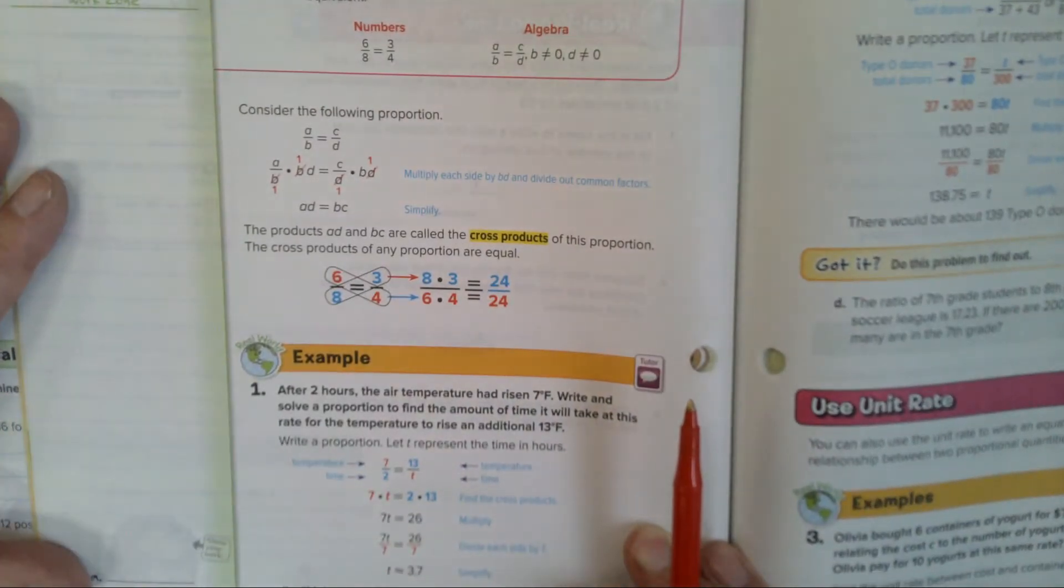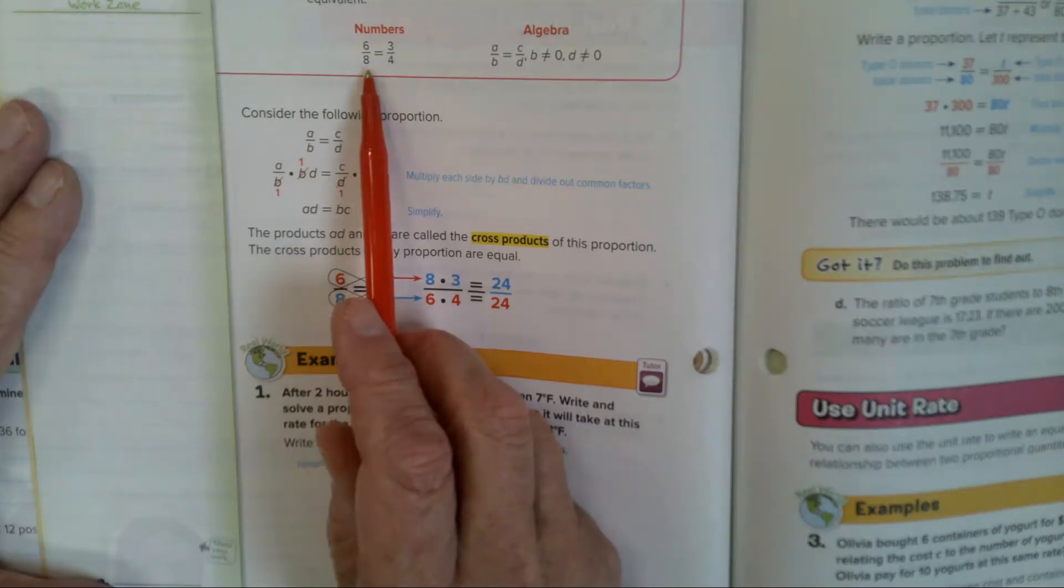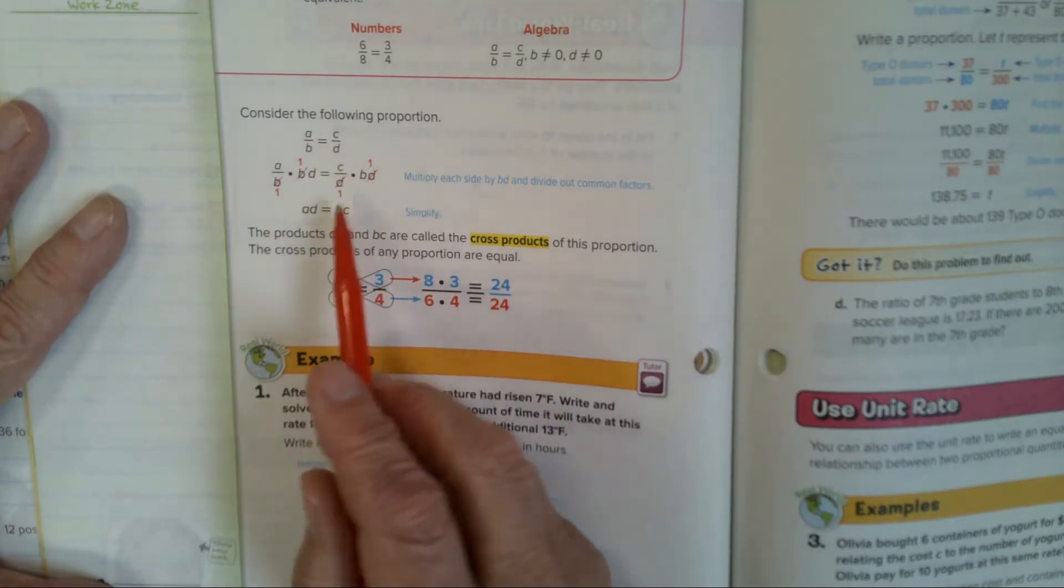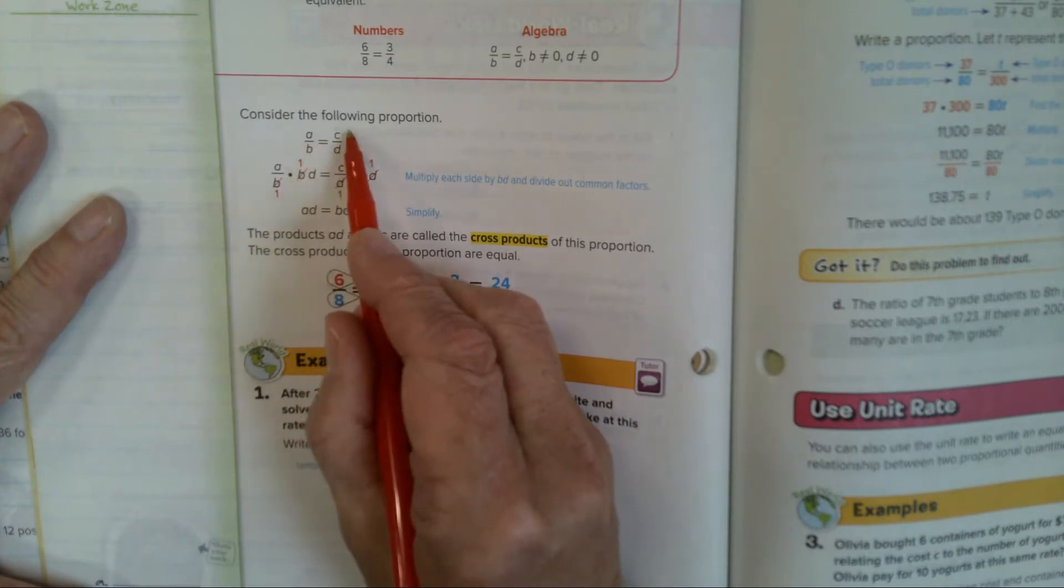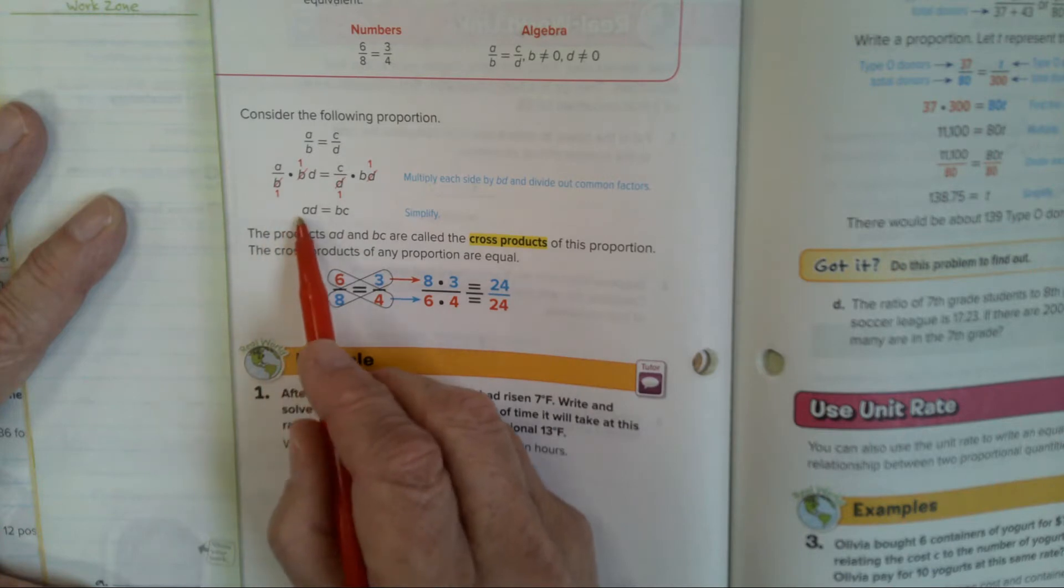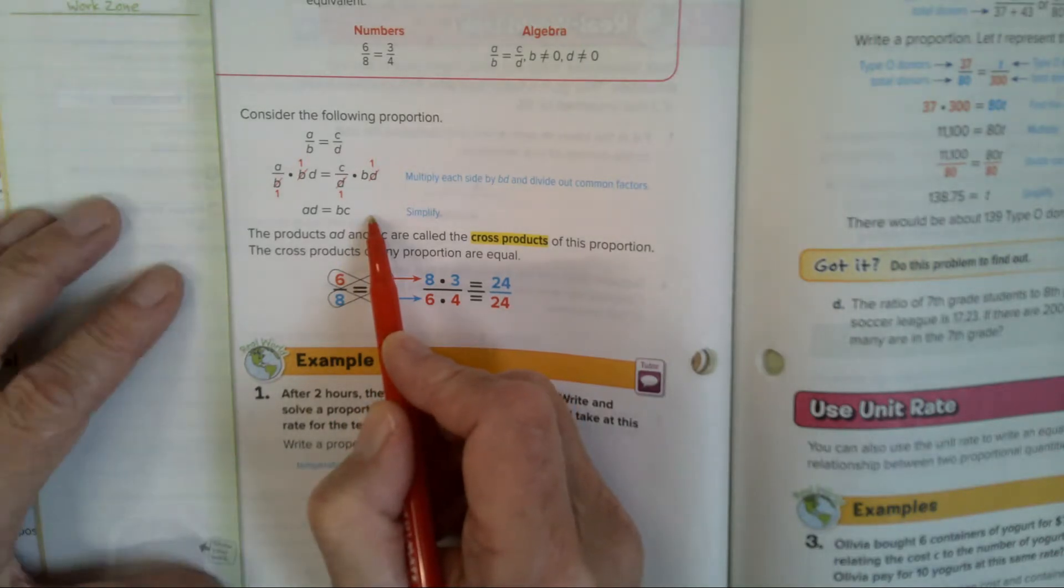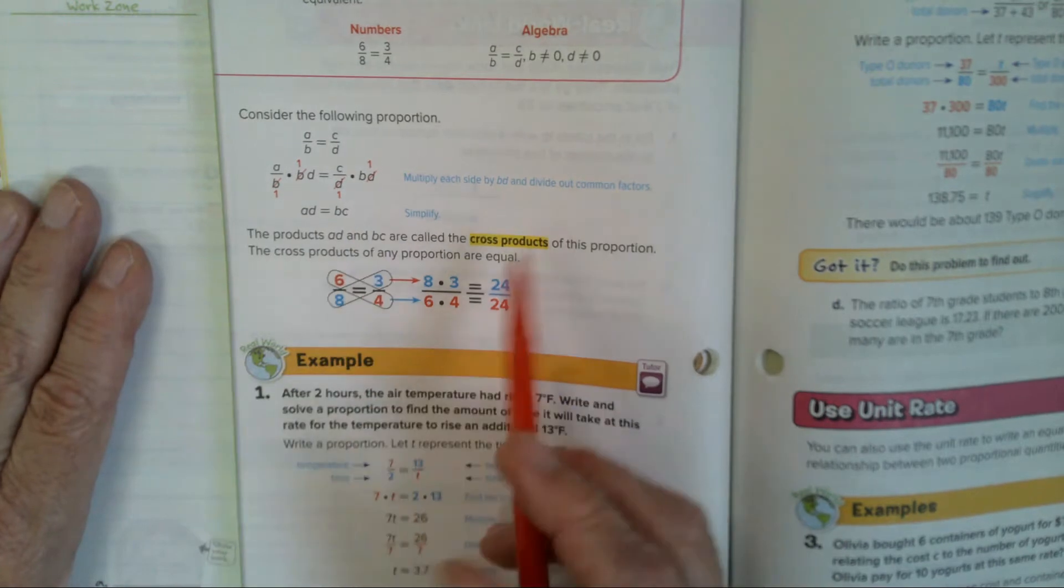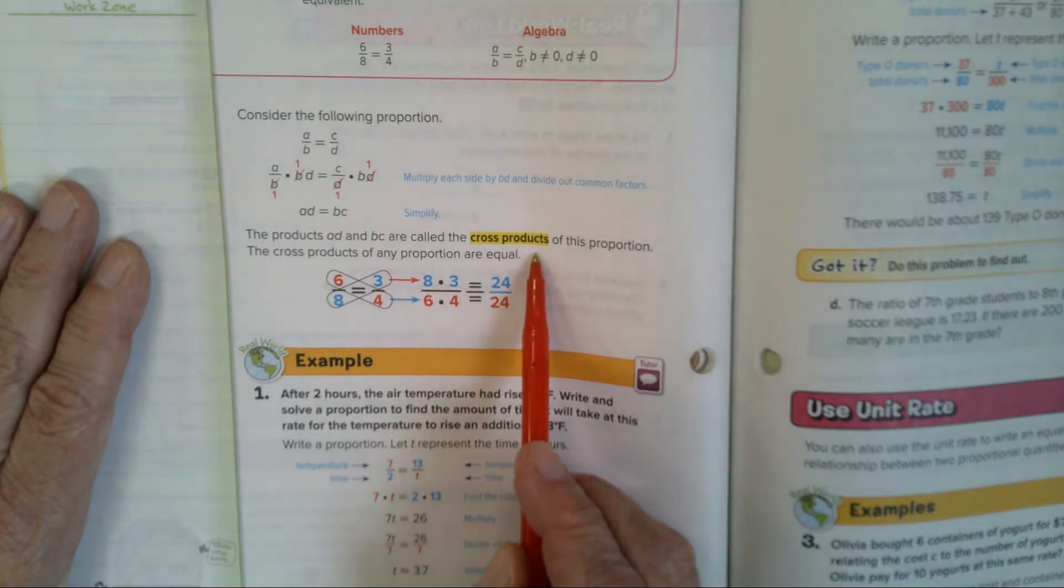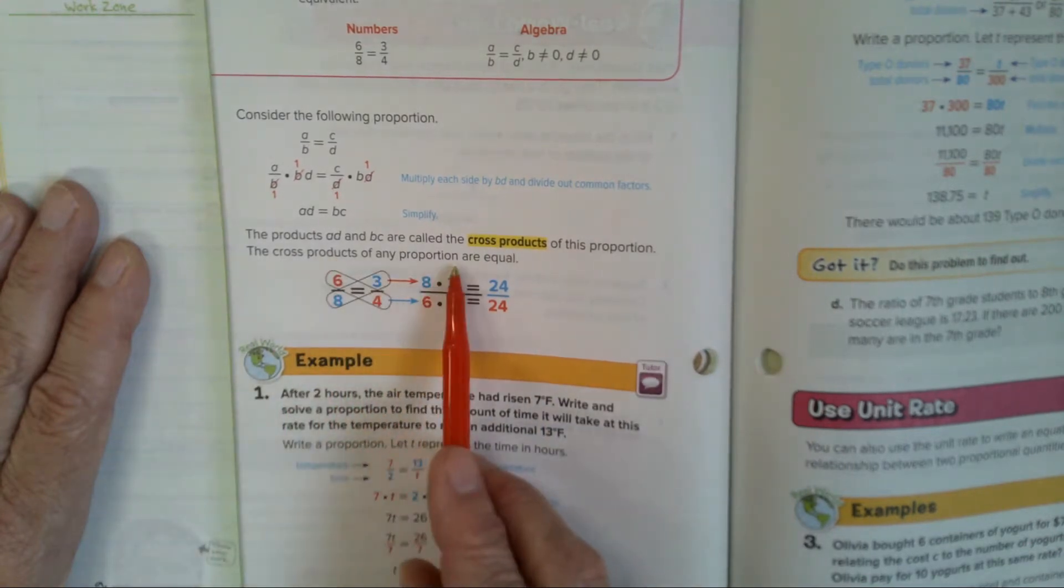Now let's look at what this lesson has for us to learn about. We're going straight to cross products. Consider the following proportion. Sometimes, kids, they're not as simple as 6 8 equals 3 4ths. So if you have A over B equals C over D, you can do what's called the cross product. You take B times C and A times D, and they should equal each other. So you would write down A times D equals B times C.